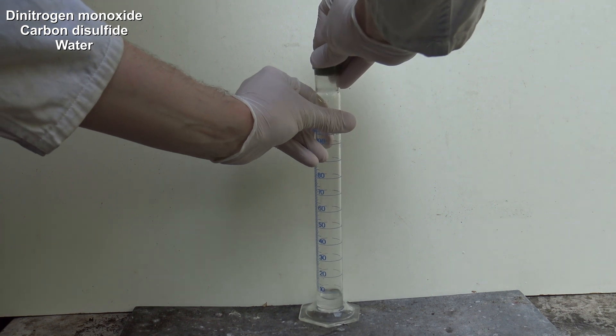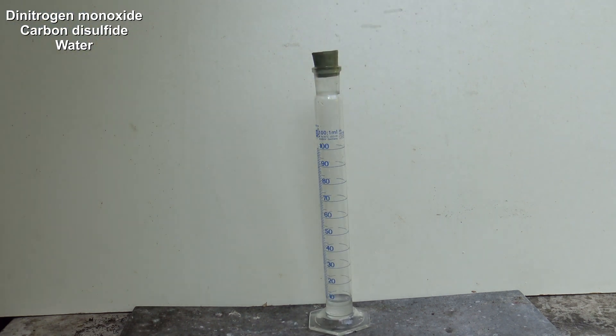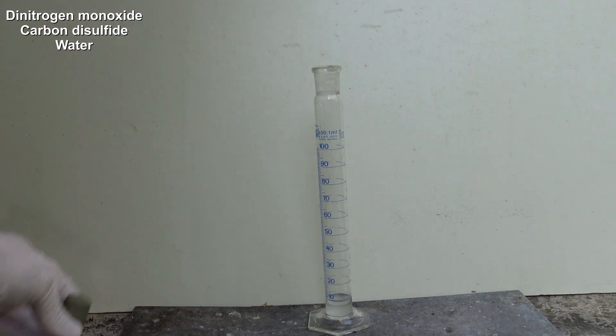In this graduated cylinder are dinitrogen monoxide, carbon disulfide and water. When these are mixed well and the ratio is right, the famous barking dog reaction should be happening when it is lit.